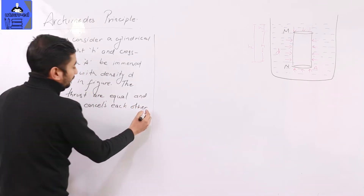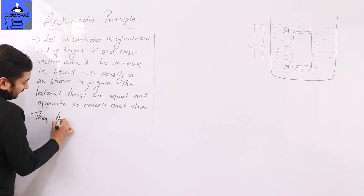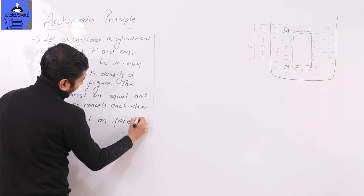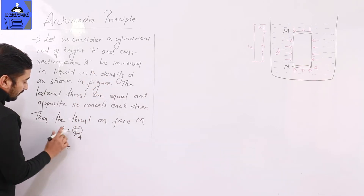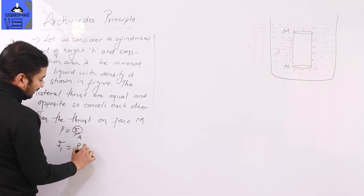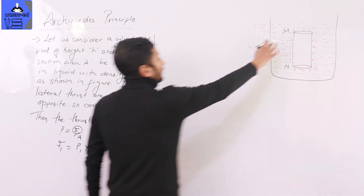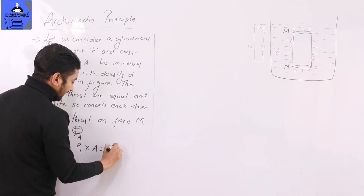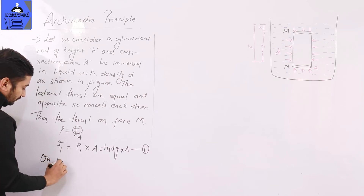So the lateral forces cancel. Now we look at the forces on the top and bottom surfaces. The liquid pressure P equals force divided by area, so force equals P times A. The force on the bottom face is F1. F1 equals P1 times A. The liquid pressure at the bottom face is D·G·H1, where H1 is the depth of that face.